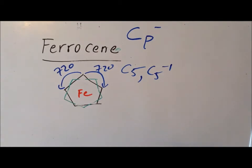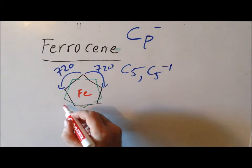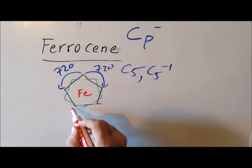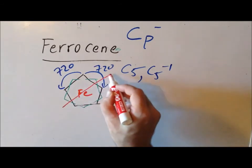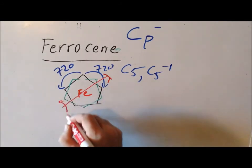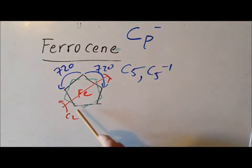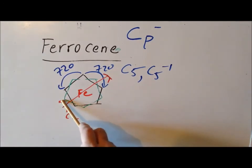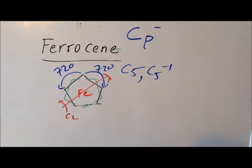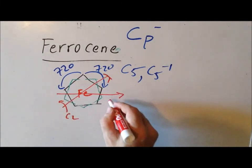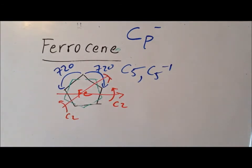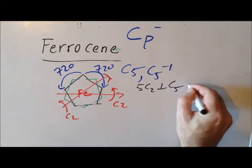Next we look for C2 axes perpendicular to the C5. In the staggered case these are trickier to find: the C2 axis goes between the vertices of the green and black rings. Rotating 180° takes a vertex of the top ring to where a vertex of the bottom ring is, and vice versa. There are five such axes. Combined with the C5, this confirms we again have a D5-type group.